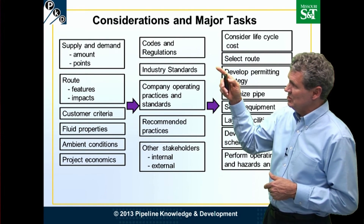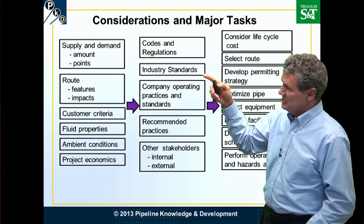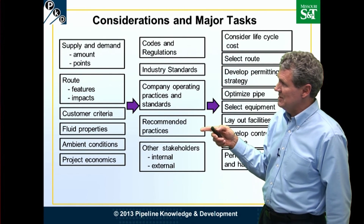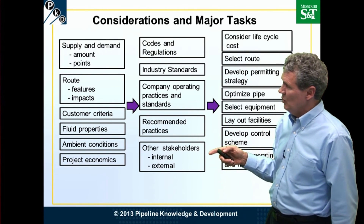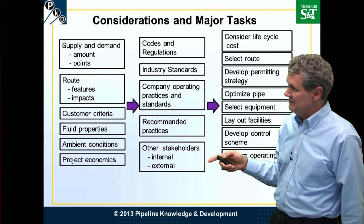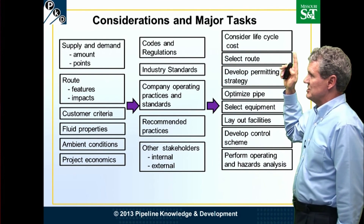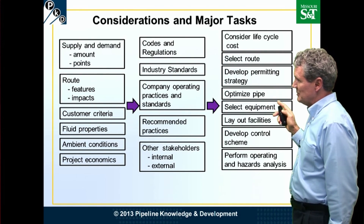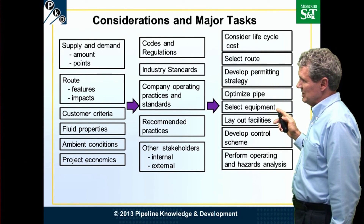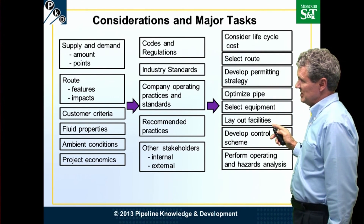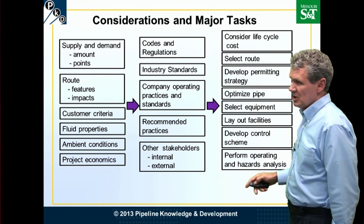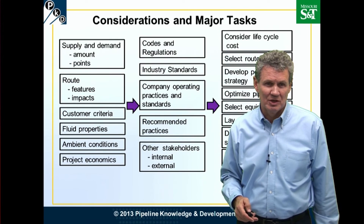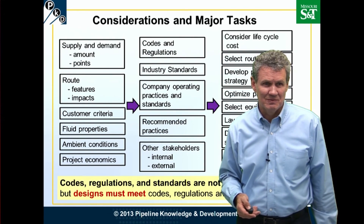As the project progresses, we look at codes and regulations, standards, company practices, industry recommended practices, and what other stakeholders need. We consider the total life cycle cost, select the route, determine the permitting strategy, optimize the pipe, select the equipment, lay out the facilities, and define the control scheme. Throughout this process we're doing hazardous analysis to make sure we're designing the safest system that we can.